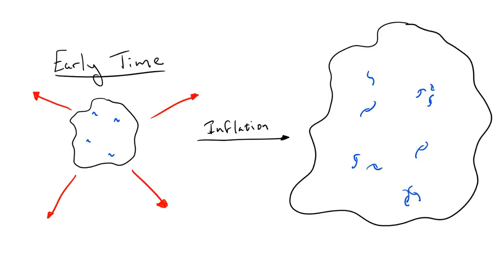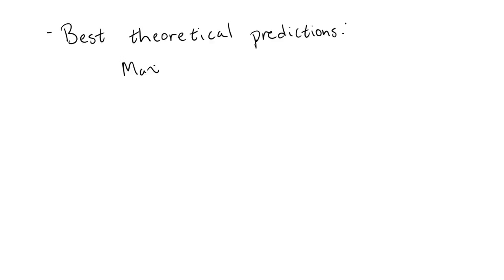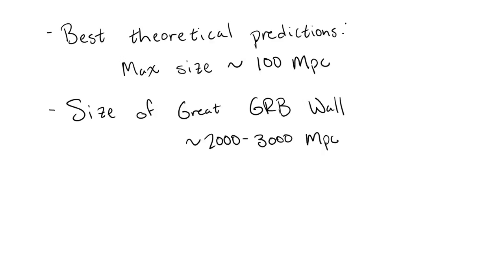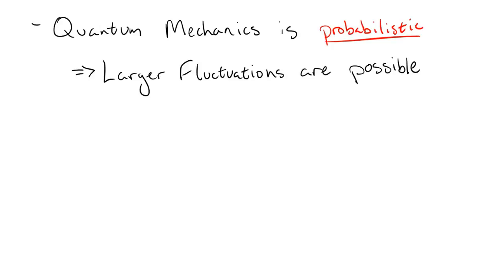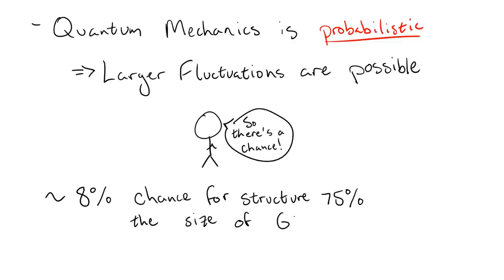However, if the Cosmological Principle is correct, these fluctuations, and thus the corresponding large scale structures shouldn't be too large. The Great GRB Wall is about 10 times the most well-accepted theoretical predictions, and so it seems to contradict the Cosmological Principle. But this isn't the end of the story. Quantum mechanics is inherently probabilistic, meaning that there would be some chance that a larger than expected fluctuation that would result in something like the Great GRB Wall could occur. However, this likelihood goes down the larger the object is and the more of them there are, so whether or not the Great GRB Wall is actually compatible with the Cosmological Principle and the theories of inflation still remains an open question.